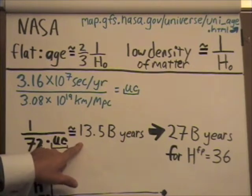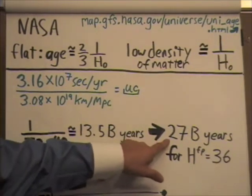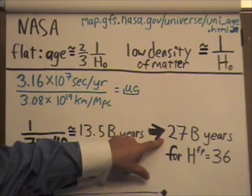Now obviously, if we're calculating a value for the Hubble constant from first principles of, let's say, a half of that is 36, then the answer would come out to be about 27 billion years.